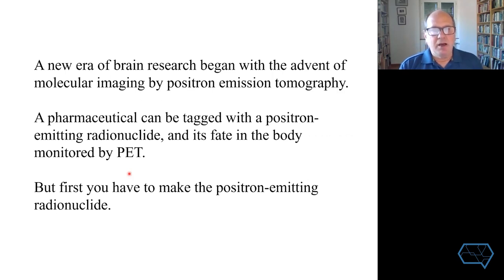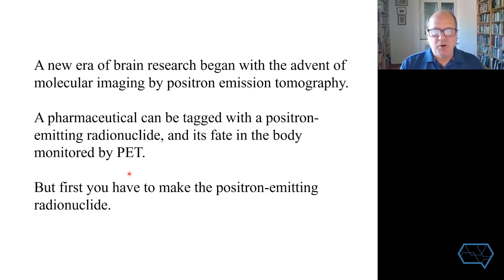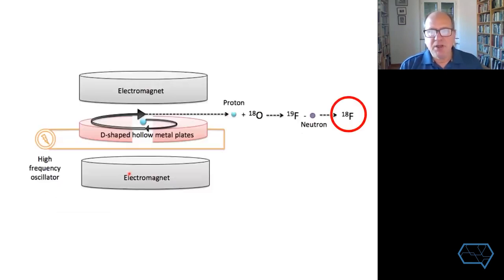A new era of brain research began with the advent of molecular imaging by positron emission tomography, which we call PET for short. In this procedure, a pharmaceutical can be tagged by incorporating into its chemical structure a radionuclide that emits radiation in the form of a positron — an antimatter electron — so you can follow where the drug goes in the body by monitoring the emissions. To do this, you have to make the positron-emitting radionuclide, which requires an instrument called the cyclotron.